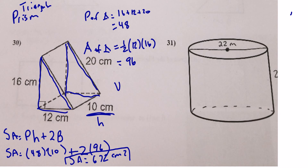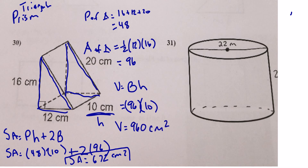Volume of the triangular prism = area of base × height. We already found the area of the base = 96. Height = 10, so volume = 96 × 10 = 960 cubic centimeters. That's it for number 30.